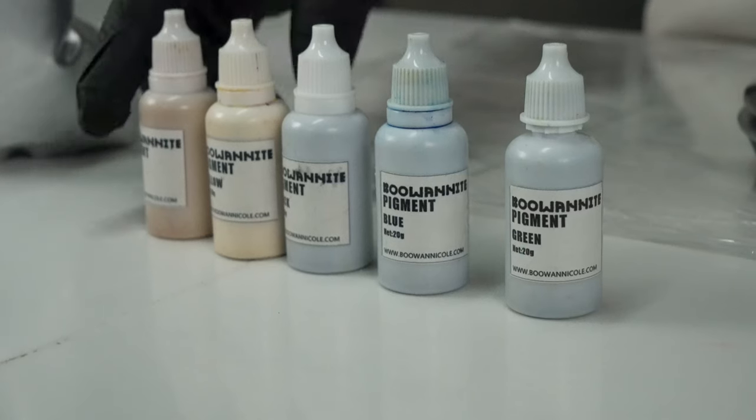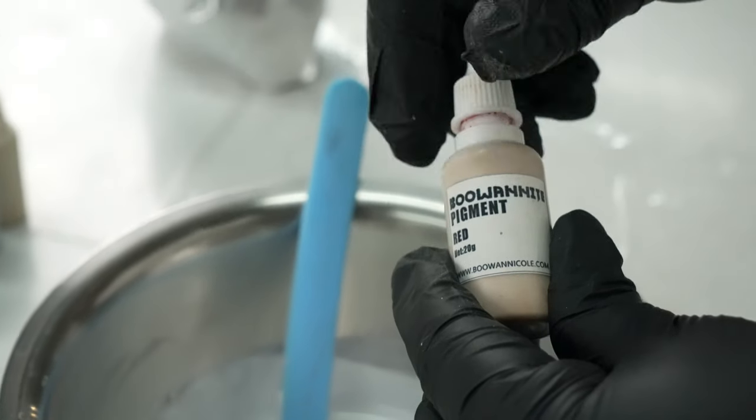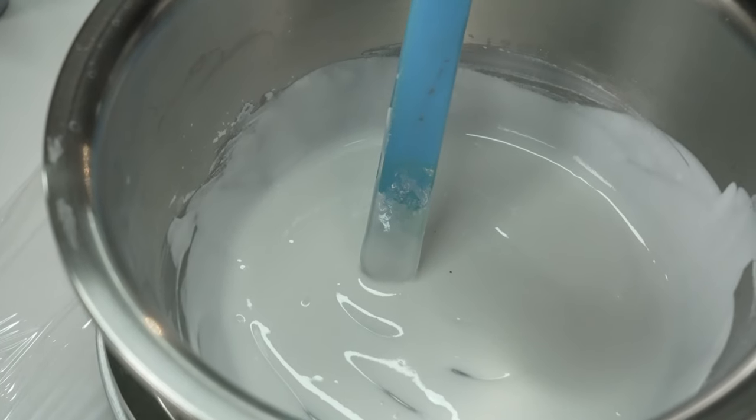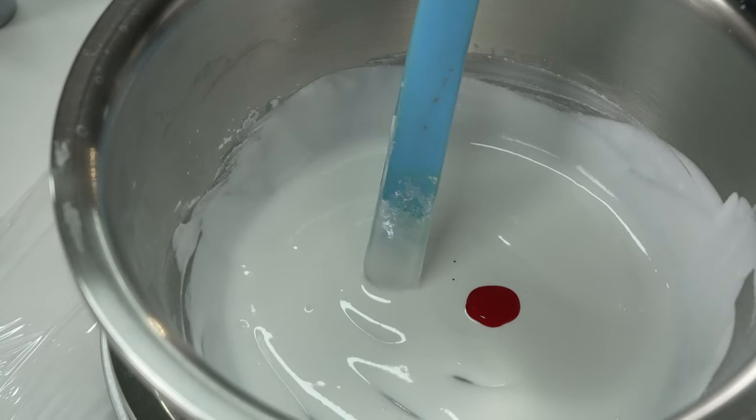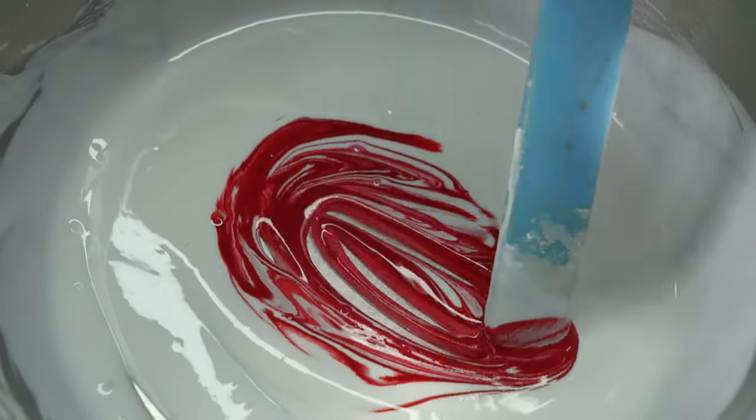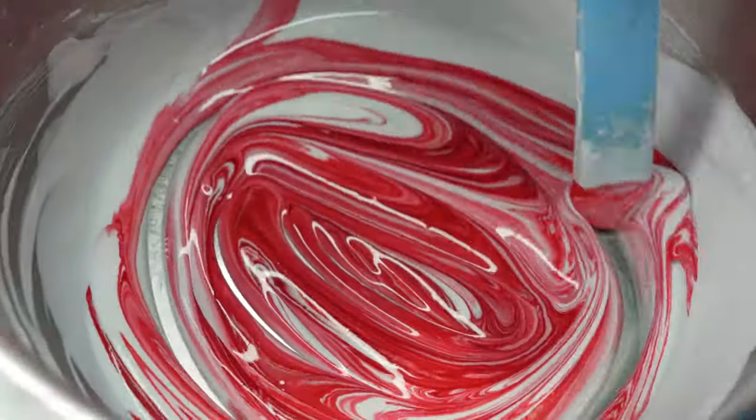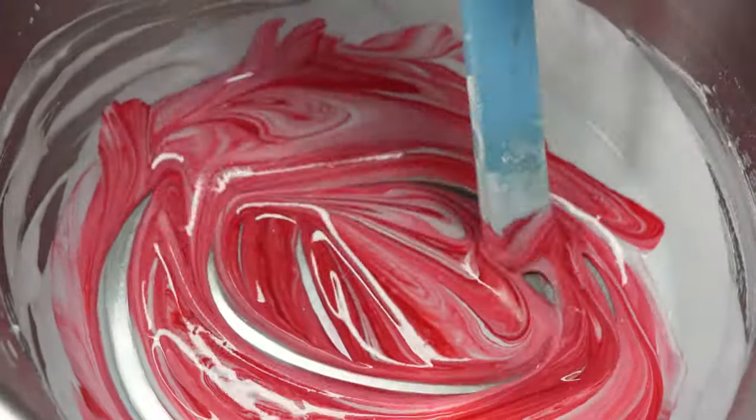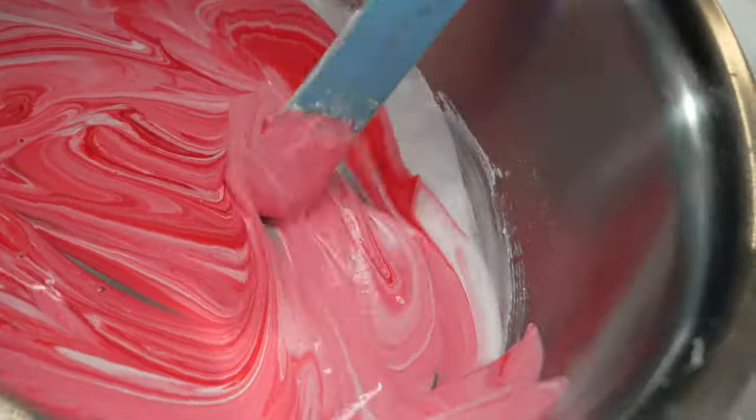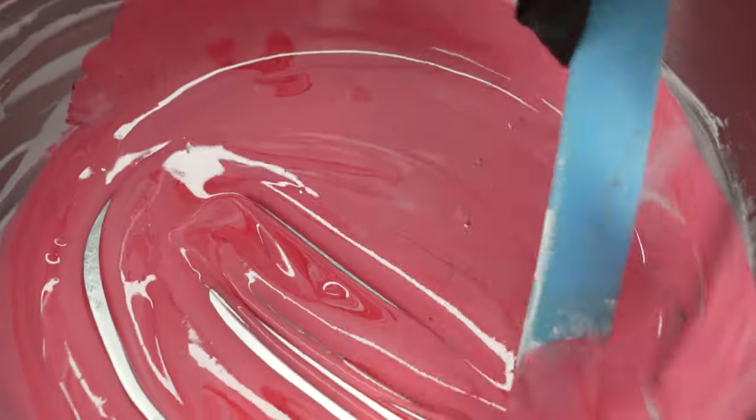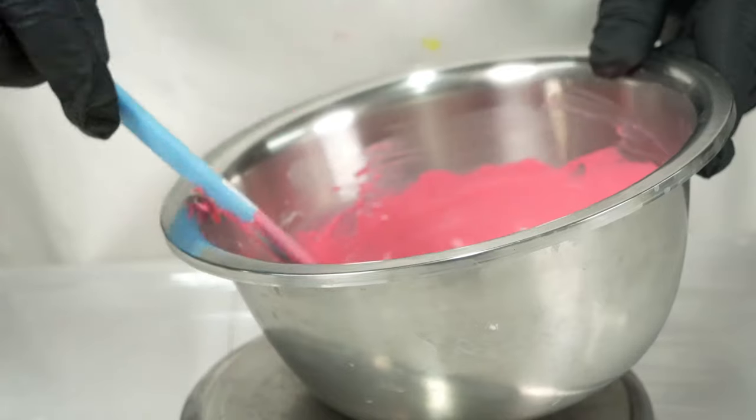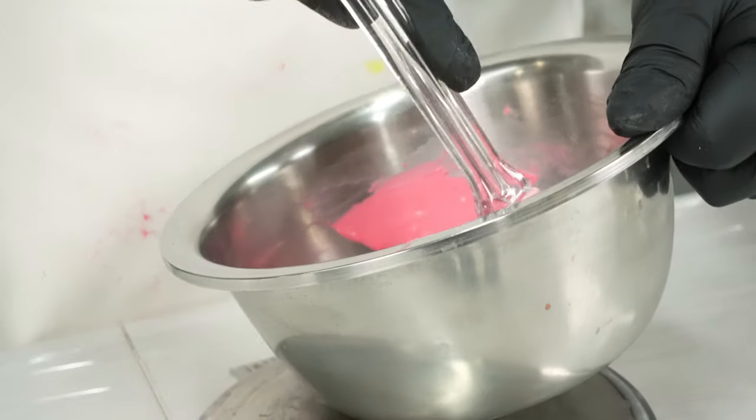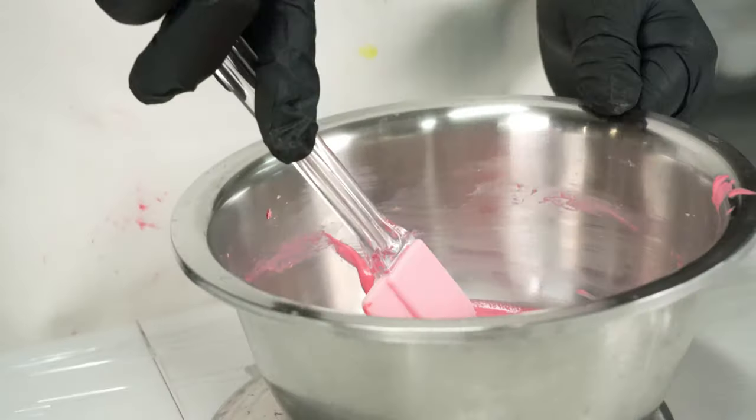Once you have a well-mixed base, you can add your desired paint color. For this, add 4 drops of red pigment and continue stirring until the color is evenly distributed. With these tips, you're now ready to create beautiful jesmonite pieces. Don't forget to share your creations with us!